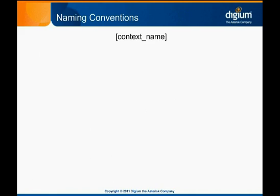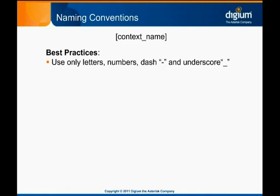Dial plan contexts are extensions.conf's version of sections. Like distinct sections in any other Asterisk configuration file, they are signified by being wrapped in square brackets. In Asterisk 1.8, there are few rules enforced on context names. However, we recommend you only use letters, numbers, and the dash and underscore characters in context names.